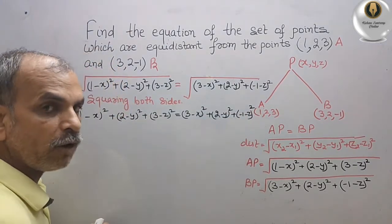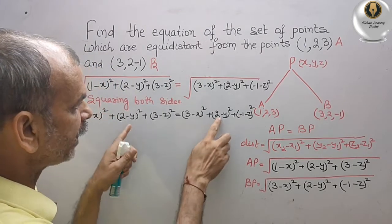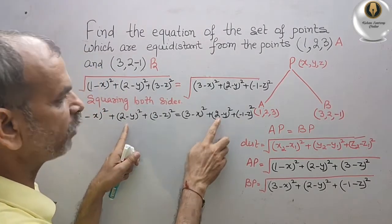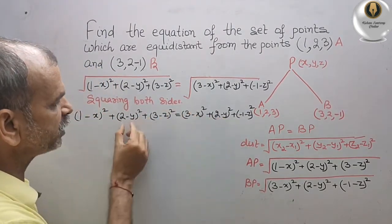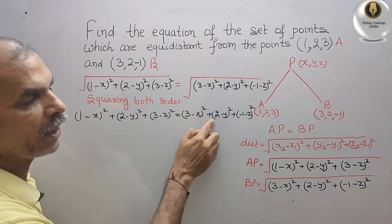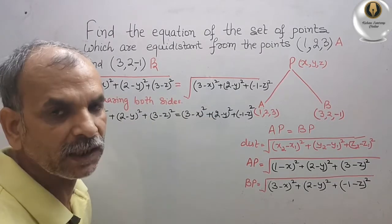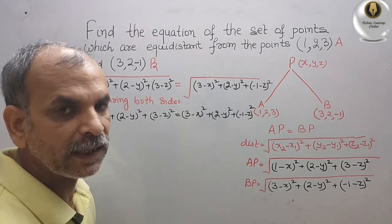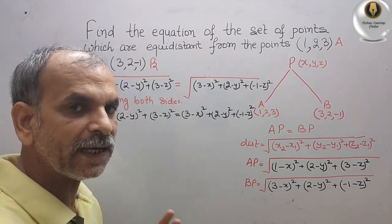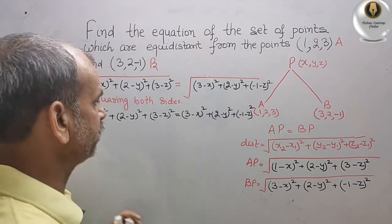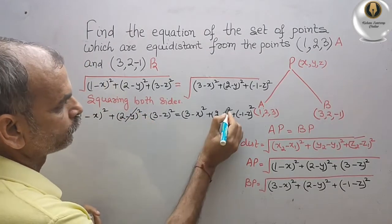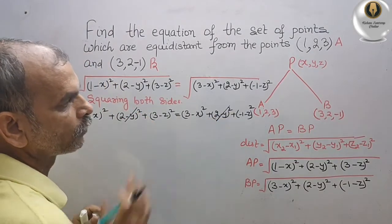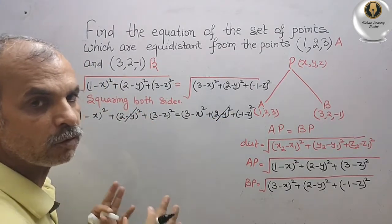Now you can see that (2 minus y) whole square appears on both sides. If you bring it from one side to the other, it becomes a minus of that. That means we can directly cancel it from both sides.